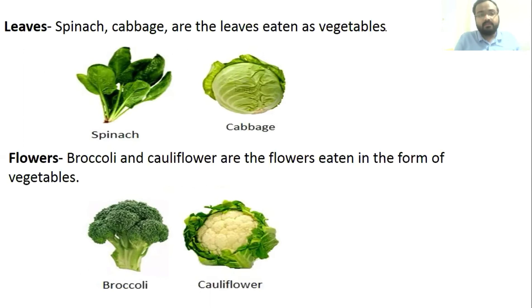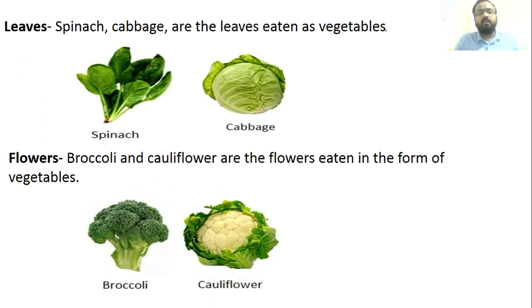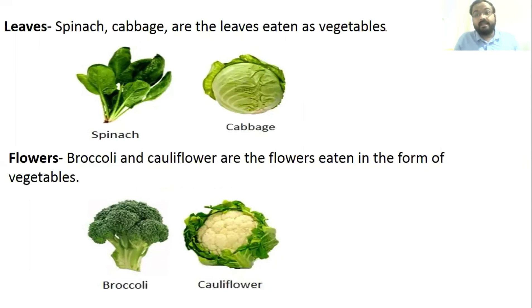Next are flowers. Broccoli and cauliflower are flowers that are eaten as vegetables — they are the flowers of their respective plants.